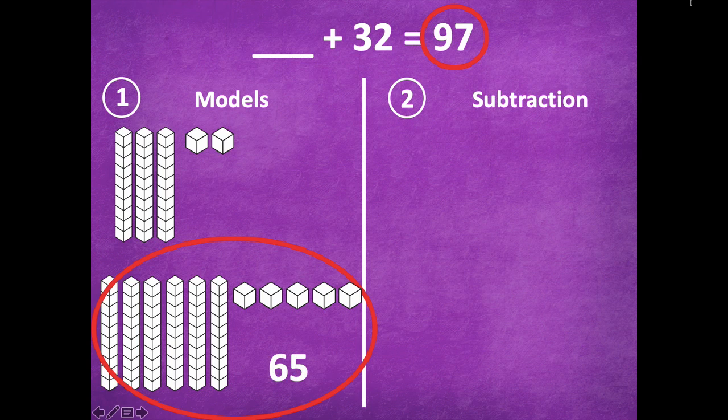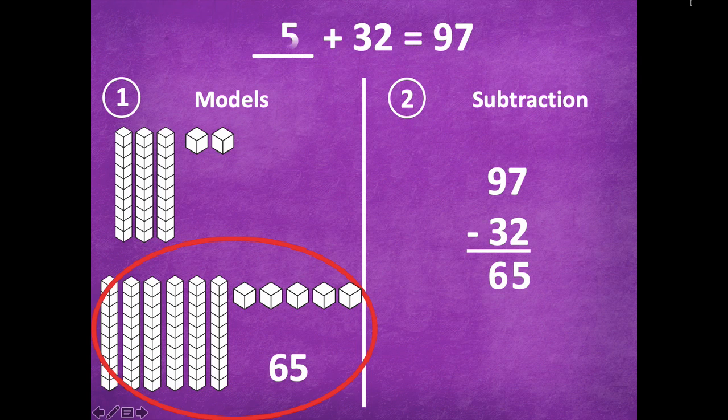Yeah, 65! Okay, so let's try the subtraction method. Remember, starting with the sum to be able to subtract because you have to start with the largest number with subtraction. So it'd be 97 minus 32. Well I know that 7 minus 2 is 5 in the ones place, and in the tens place, 9 minus 3 is 6.